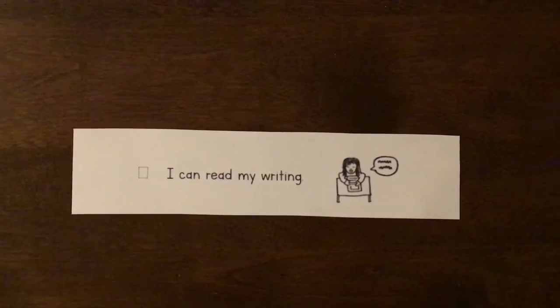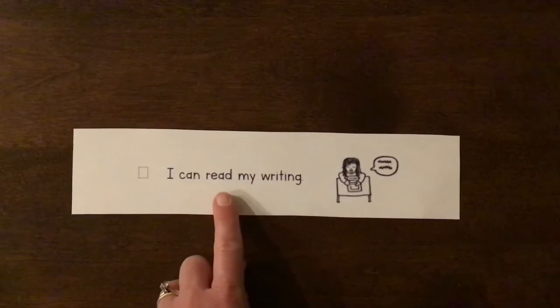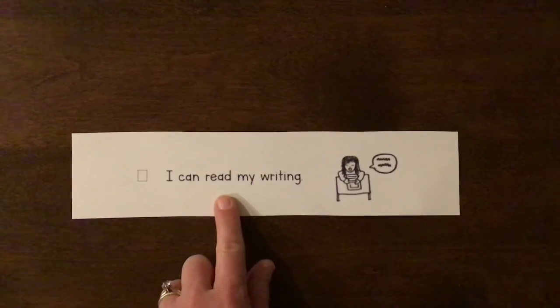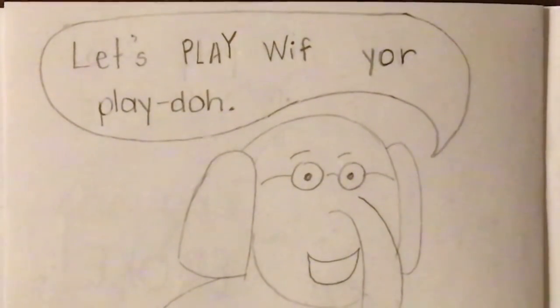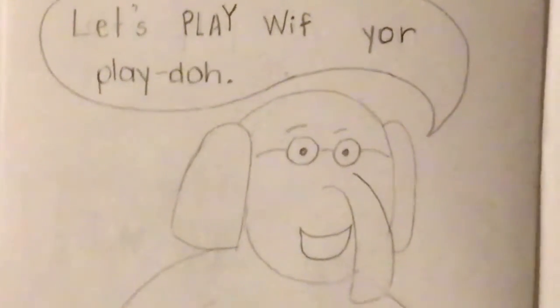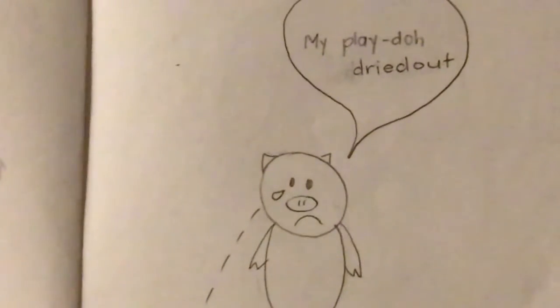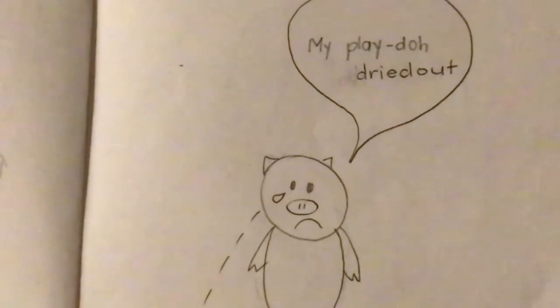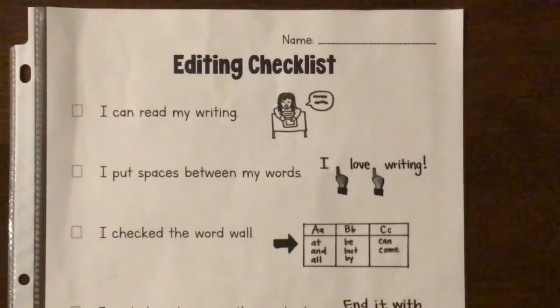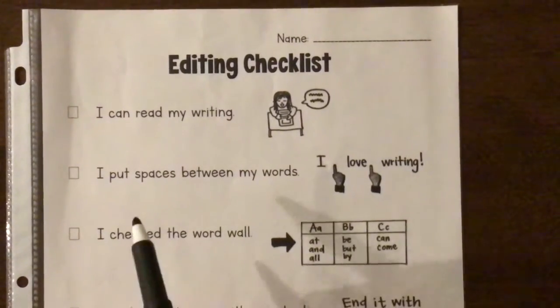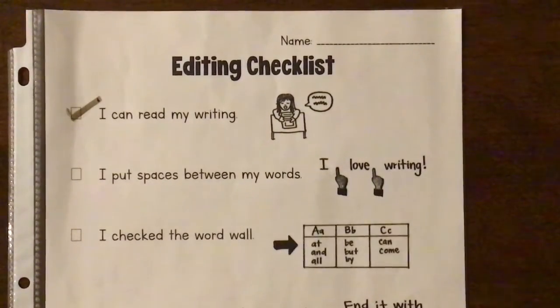The first thing on the editing checklist is: I can read my writing. That means we need to read our book and make sure that we can read it. This page says, 'Let's play with your Play-Doh.' Yep, I can read that. Let's check this page over here. Piggy says, 'My Play-Doh dried out.' Yep, I can read that too. I can mark off the first thing on my editing checklist: I can read my writing.